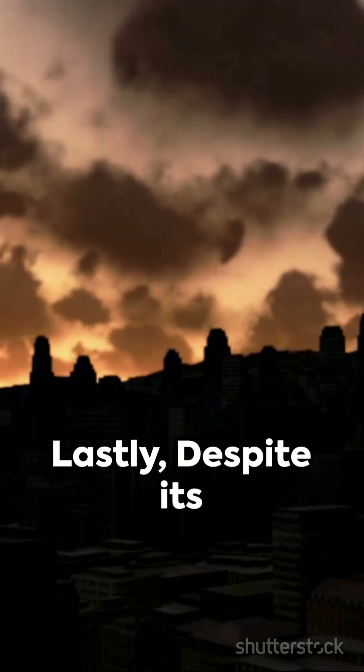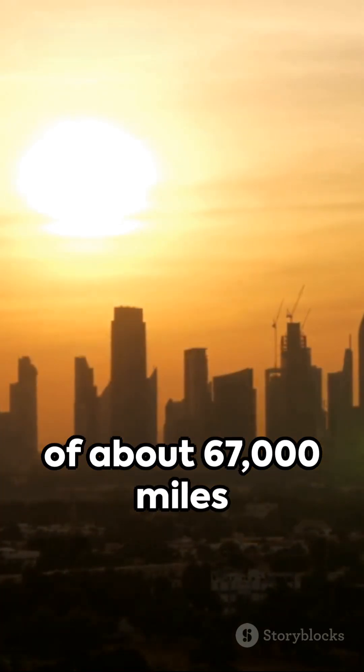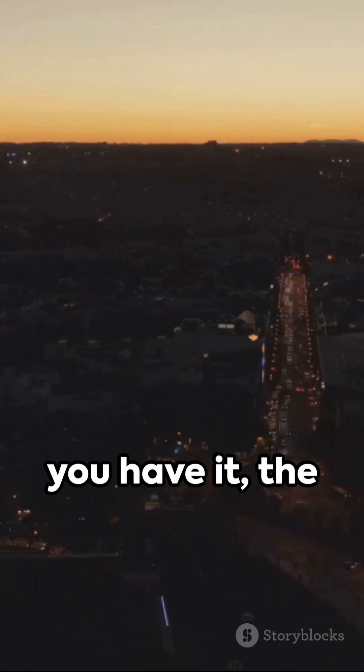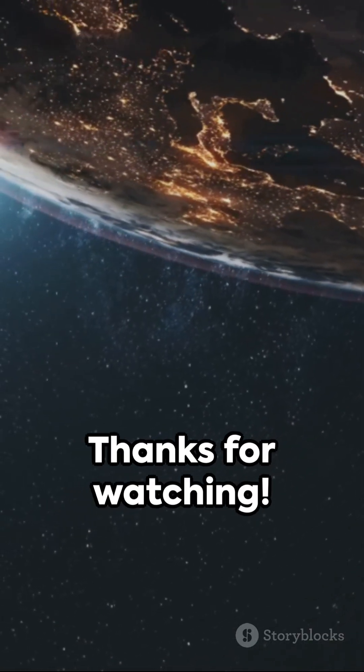Lastly, despite its immense size, Earth travels through space at a staggering speed of about 67,000 miles per hour in its orbit around the Sun. And there you have it, the first part of our exploration into the wonders of Earth's orbit. Thanks for watching.